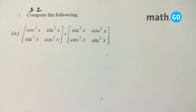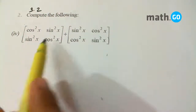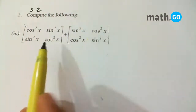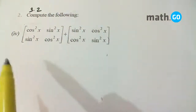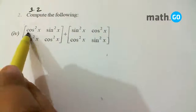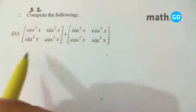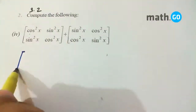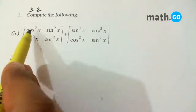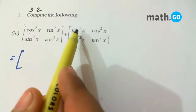Exercise 3.2, question number 2 says compute the following — a simple matrix addition. For two matrices of the same order, the sum will be the sum of the corresponding elements.